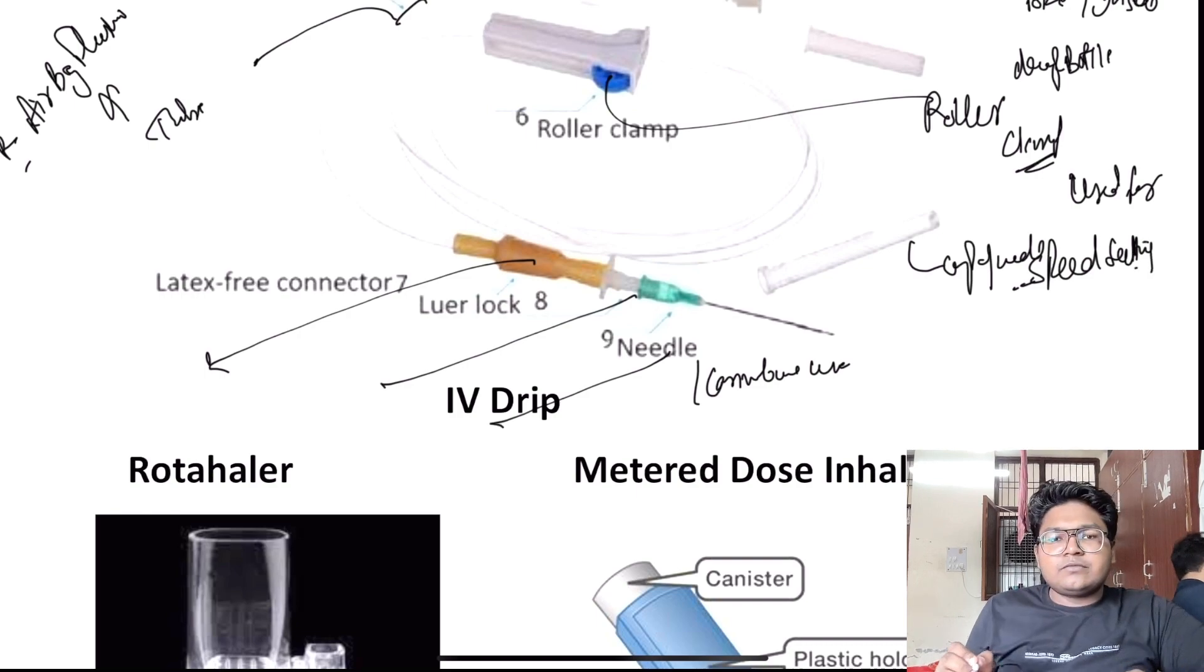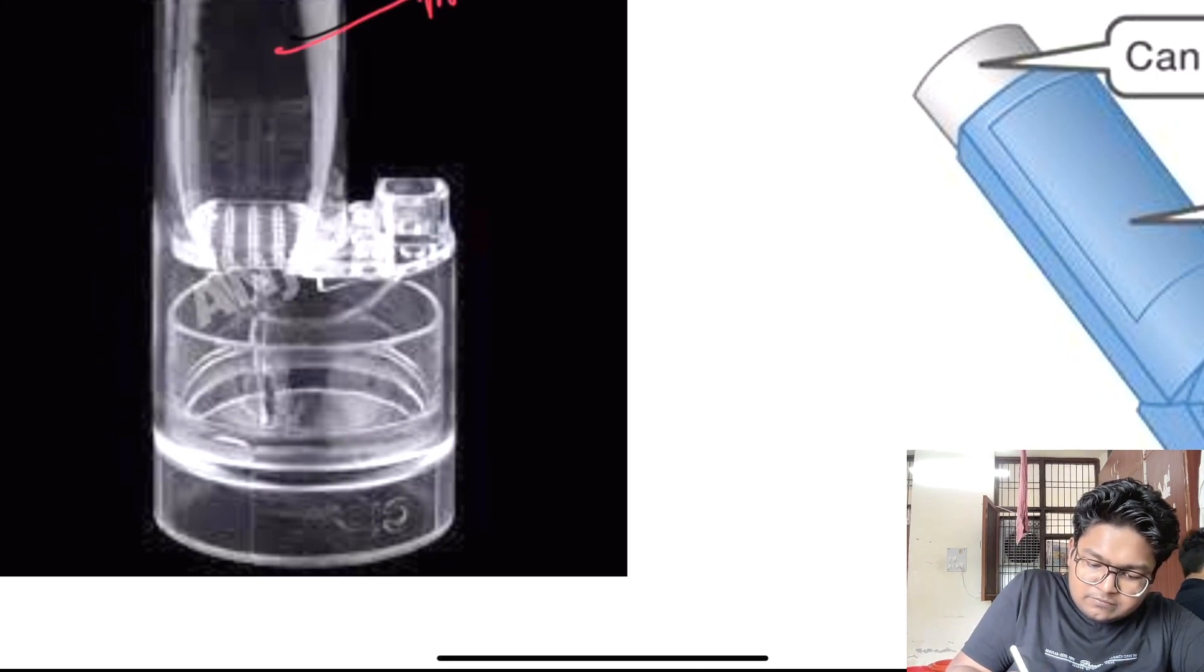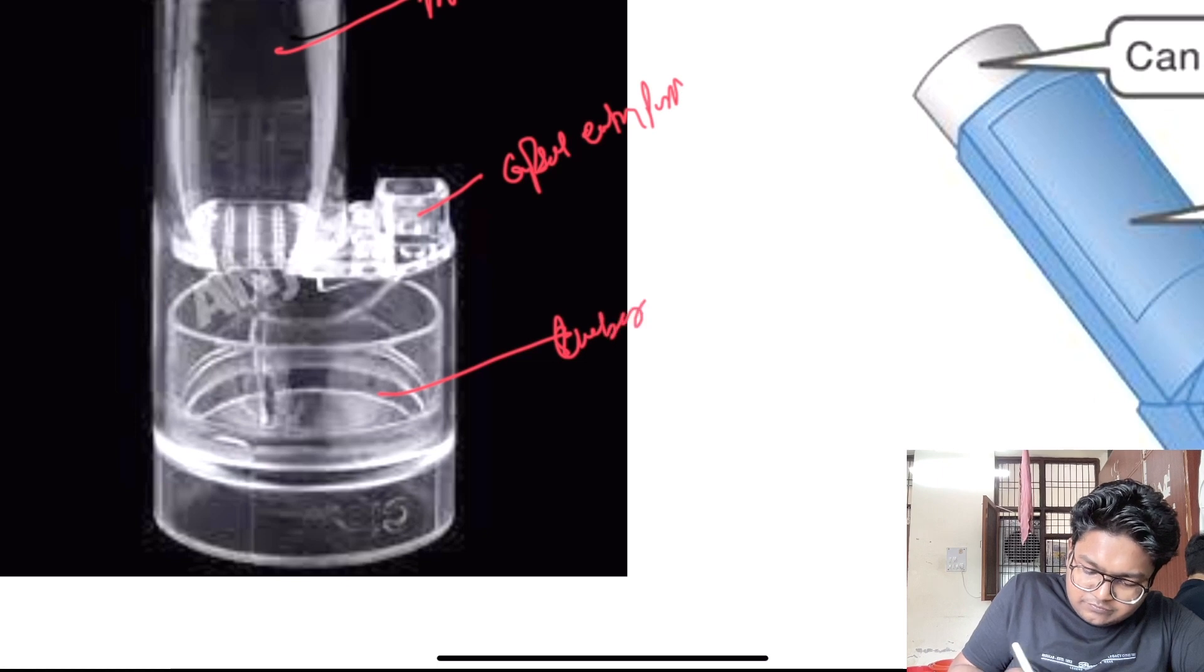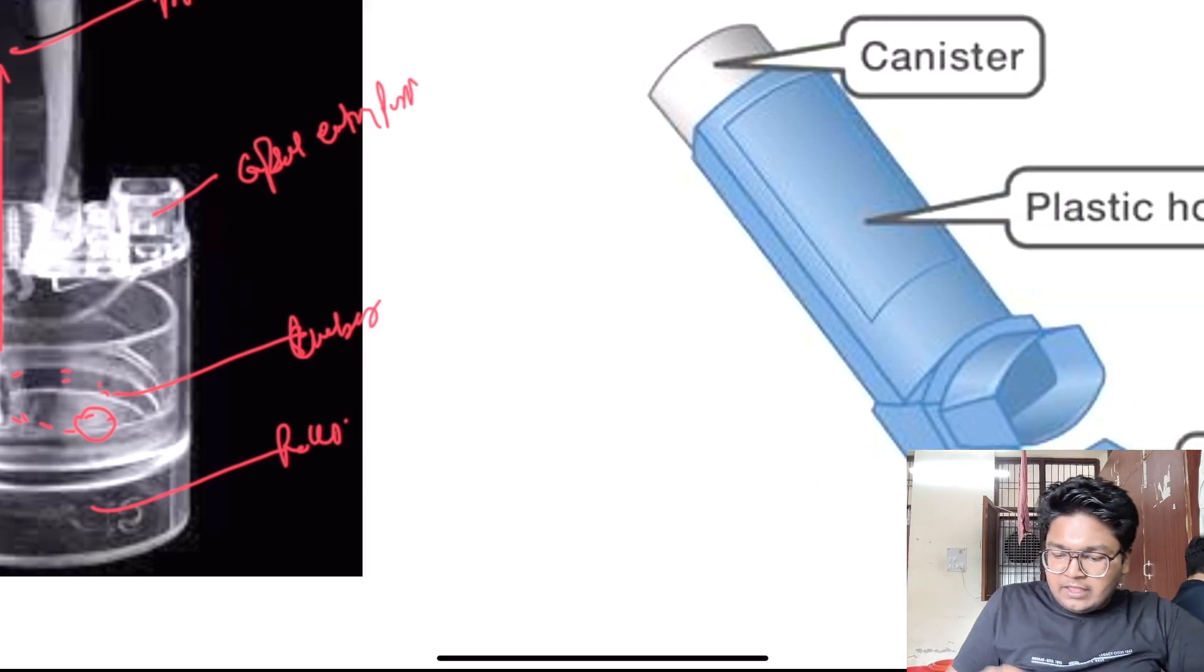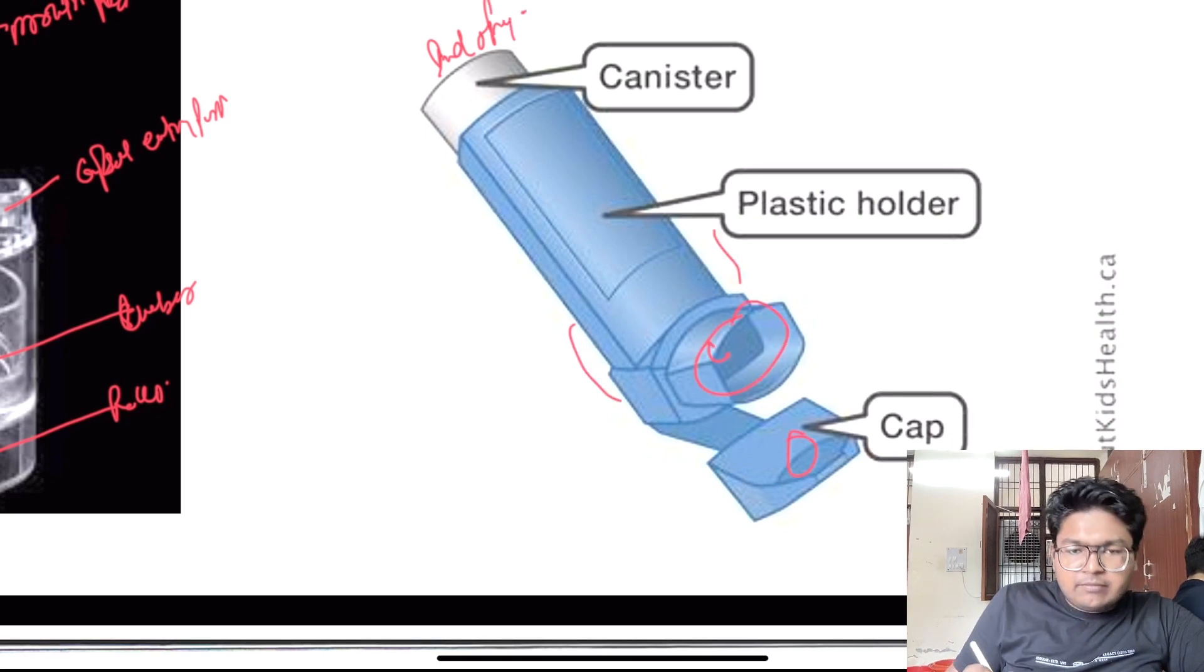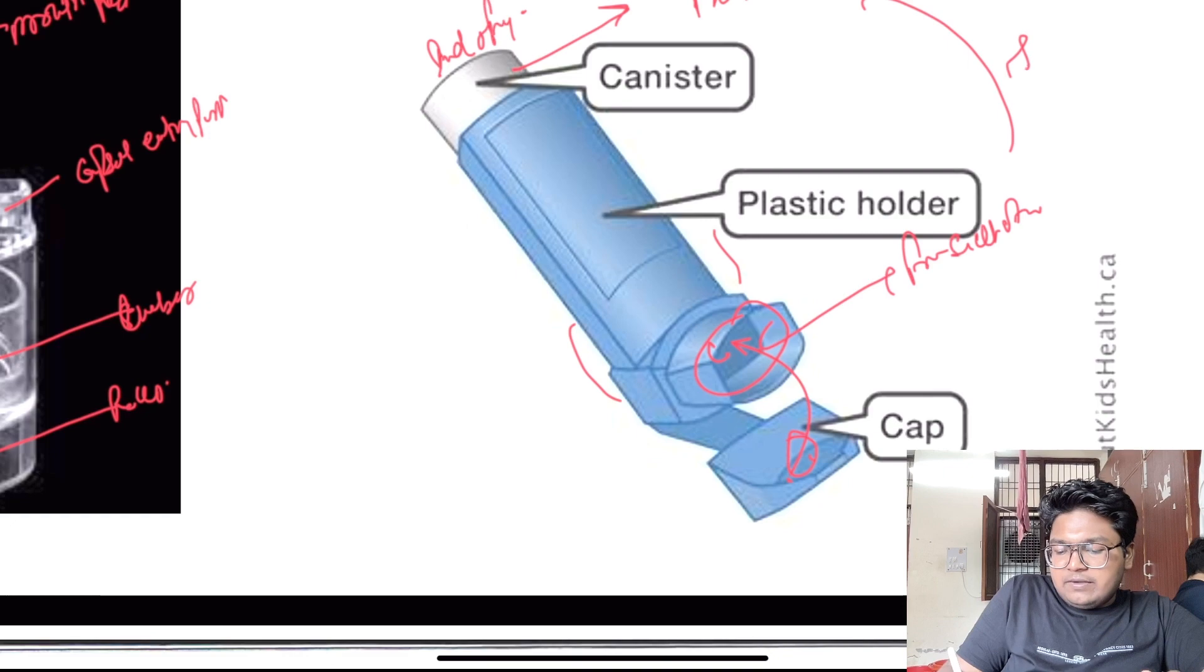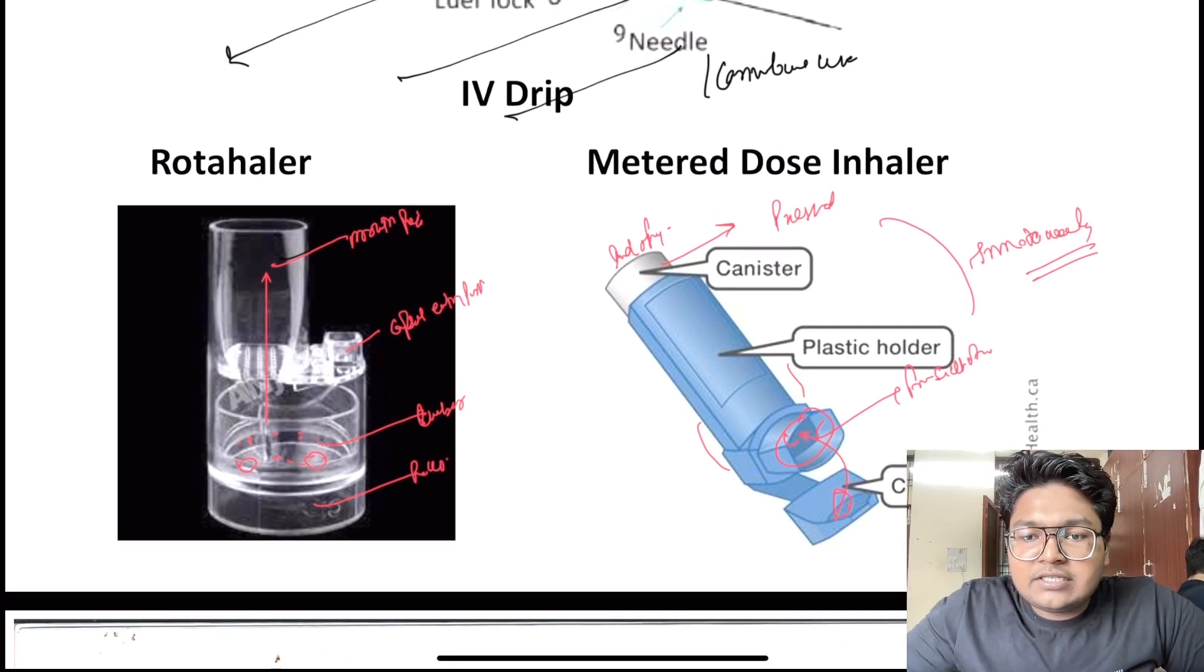This is the rotahaler: this is the mouthpiece, this is the capsule entry port, this is the chamber, this is the roller. The capsule will break here - the dust particles will be there. It will go from this side and you have to open this and throw it. This is the canister with index finger on this, this is the cap, this is the mouthpiece. The cap should be closing this side and this should be pressed from here.